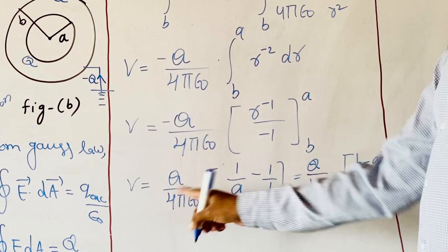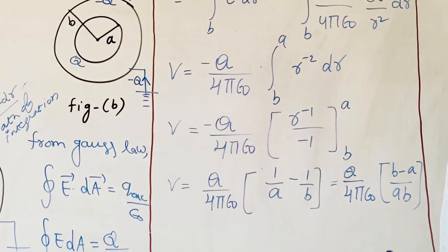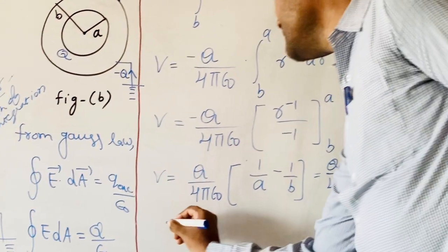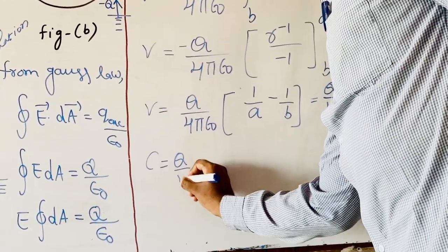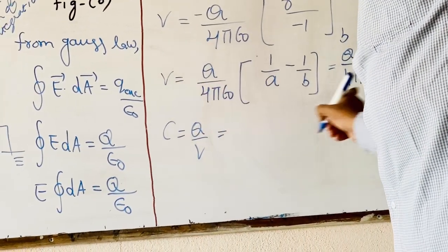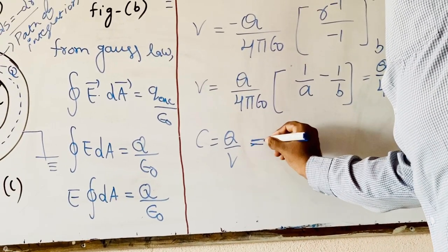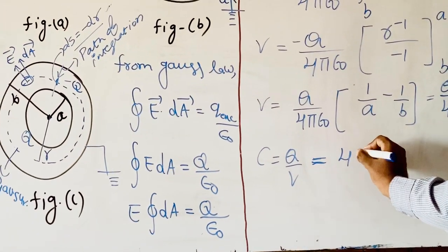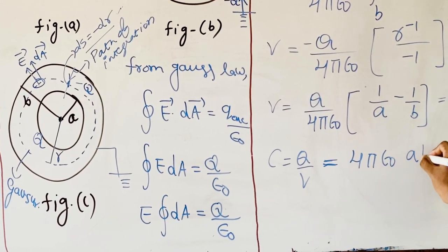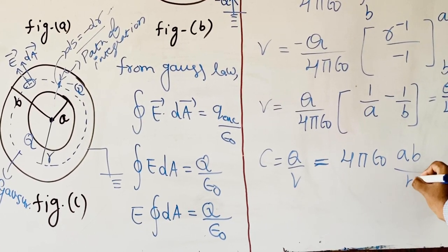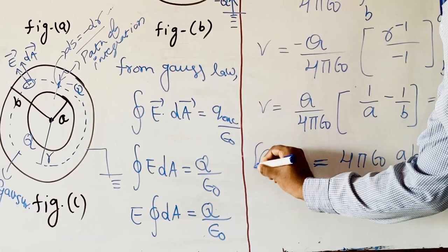This is the value of V. Once we calculate V, simply C = Q/V. Substituting the value of V, we get C = 4πε₀ × (ab)/(b − a). This is the result for the spherical capacitor when the outer sphere is earthed and the inner sphere is charged.